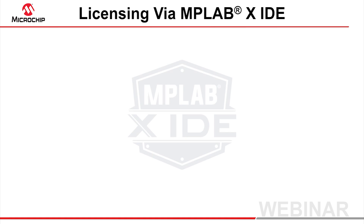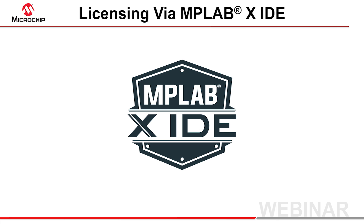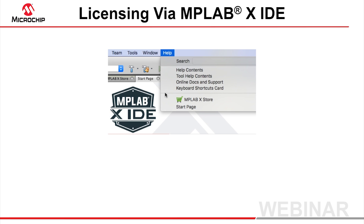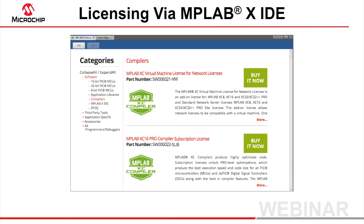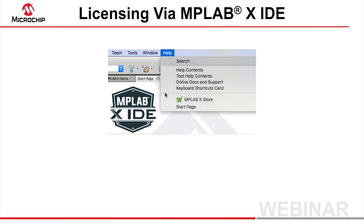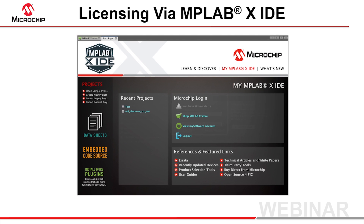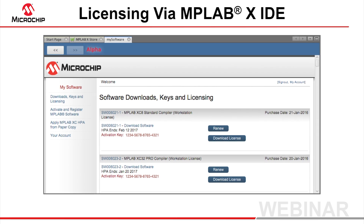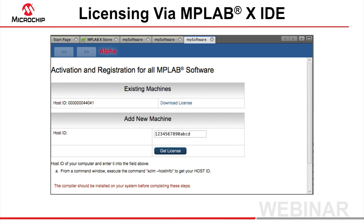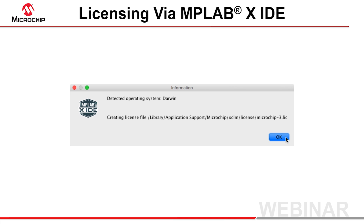The webpages where you may purchase and download license files are also accessible inside MPLAB X IDE. If the MPLAB X Store page is not visible, open it from the Help menu — MPLAB X Store. Click on any product to go straight to the Microchip Direct page for that item, where you can follow the purchase steps as per the Microchip Direct website. To obtain compiler information or download license files, open the Start page from the Help menu — Start Page. Log in to the IDE if you haven't already, and click the View My Software Account link. You might need to re-enter your login details for the My Software webpage which opens. Click the Download License button for any compilers purchased through Microchip Direct or the MPLAB X Store. The IDE will automatically complete your host ID and execute the script to install the license file for you.